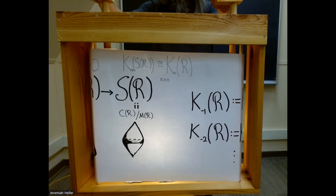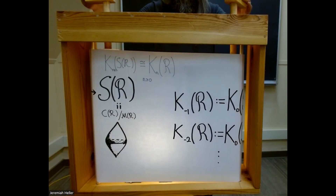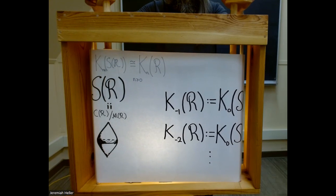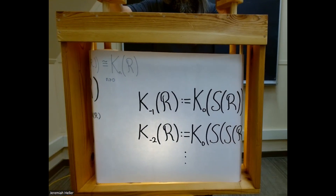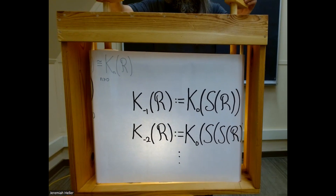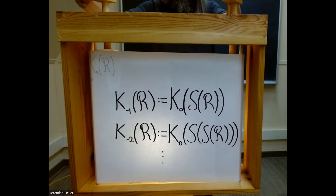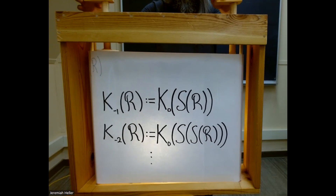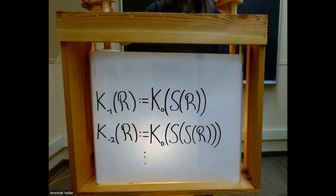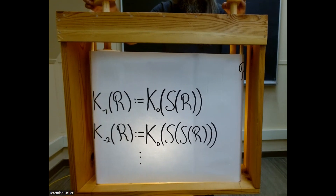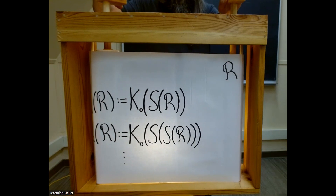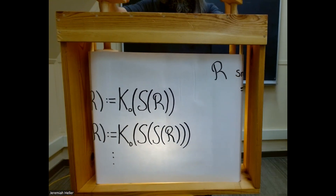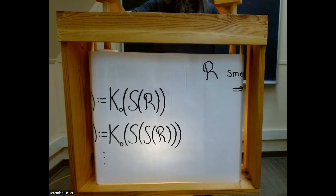We extend the K-groups to negative degrees using iterations of the suspension ring. For example, K-1 of a ring is defined to be K-0 of its suspension ring. This method of using the cone ring to define negative K-theory is due to Kurobi and Villamayor. There are various other ways of defining the negative K-groups, each with its own particular advantage, but at the end of the day all methods produce the same values for negative K-theory.